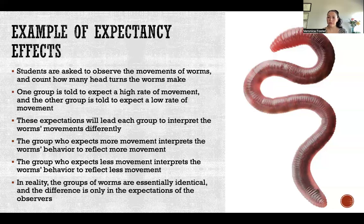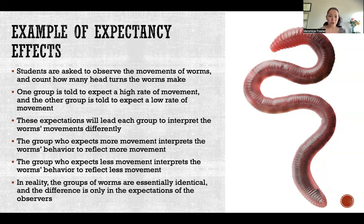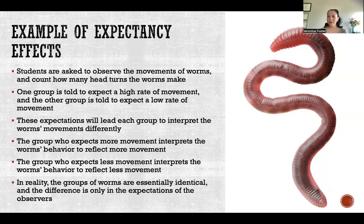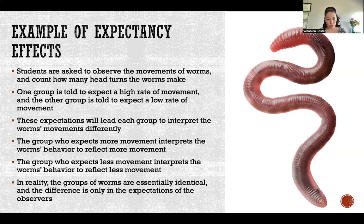Here's a specific example of a study about observing the movement of worms. We have a group of students and a group of worms that are all essentially exactly the same. Half the students are told there should be a high rate of movement, and the other half are told there should be a low rate of movement. Even though all the worms are essentially identical, the group told to expect a high rate of movement recorded a much higher rate of movement than the group who expected a low rate. They interpreted the movements of the worms differently in accordance with what they expected — those are expectancy effects.